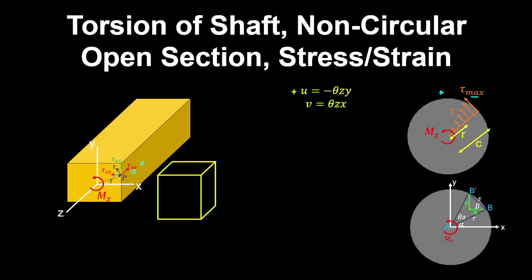Recall the displacements we derived in Cartesian coordinates for a circular shaft. We had fibre AB rotating to fibre AB dash, from which we obtained the displacements U and V. Guided by the solution for a circular shaft, Saint-Venant extended the theory with a warping function. The idea is that the section warps — developing a displacement in and out of the Z direction — produced by a warping moment, which would relieve the stress on the free surface so it is again zero.